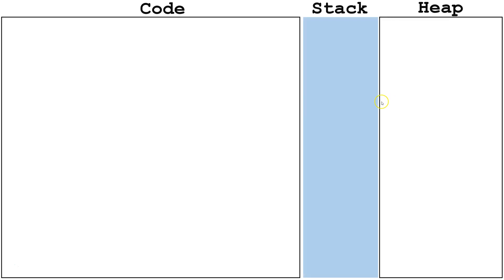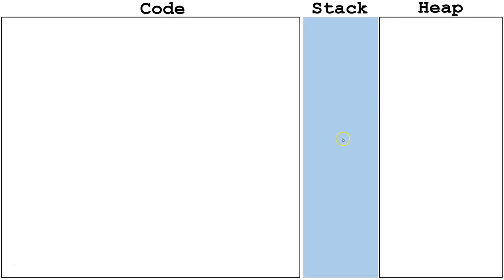Let's start by bringing up the code. Here we've got our selection sort method. We've got our outer for loop which traverses the list. We only go through list.length-1 for the outer loop, because on a selection sort, the last index will be automatically sorted. Whenever we start at a new part of the unsorted list, we will set the min index equal to the beginning of the unsorted portion of the list.